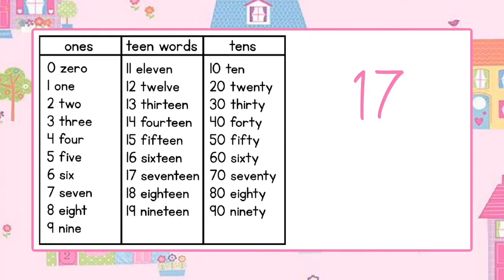This is the number 17. Let's use the chart to find the word seventeen. Because this word is a teen we have to use the middle column to find it. Now that we found it let's write the word seventeen.